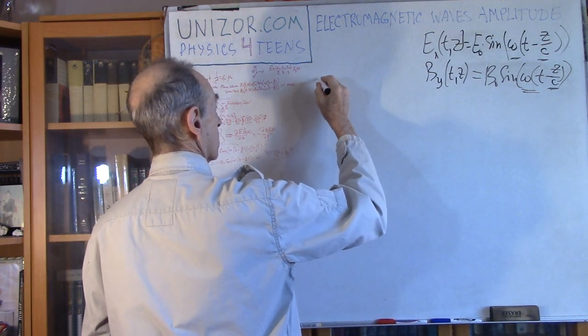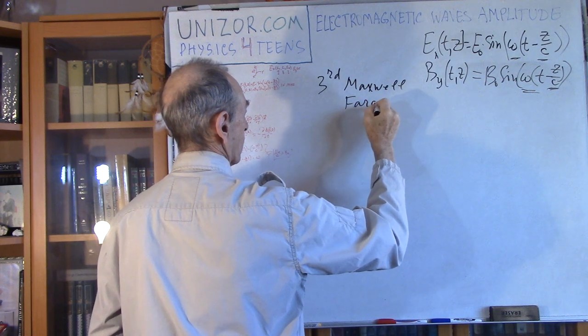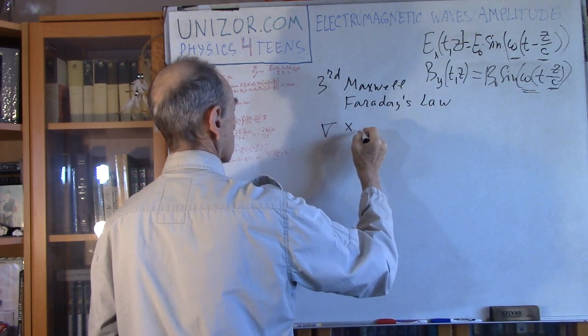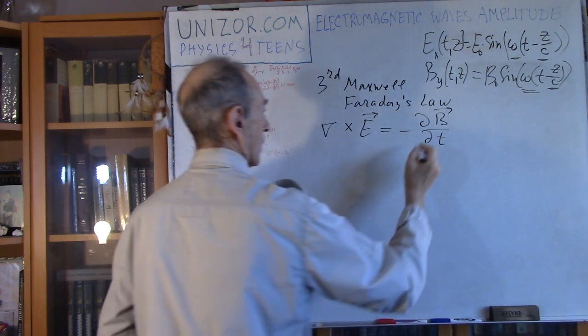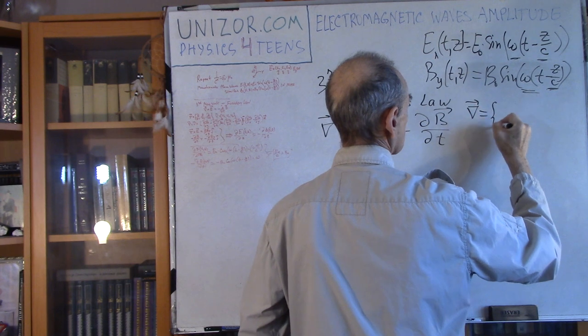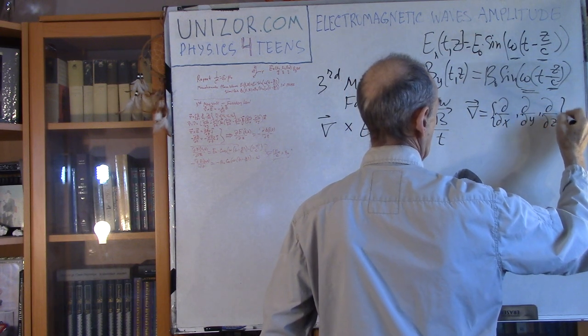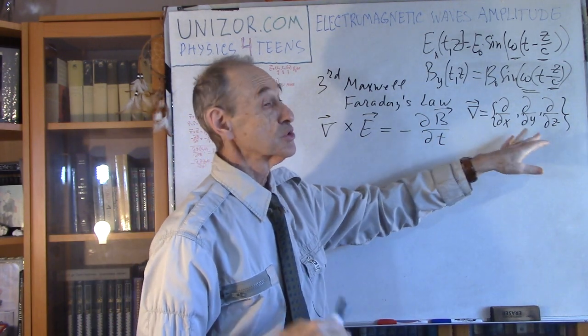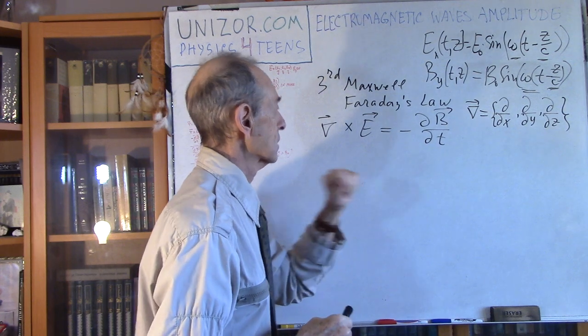There is the so-called third Maxwell equation, which is Faraday's law, which looks like this: nabla vector product with E equals minus dB by dt. Where nabla is a pseudo-vector, which is actual differentiation by coordinates.